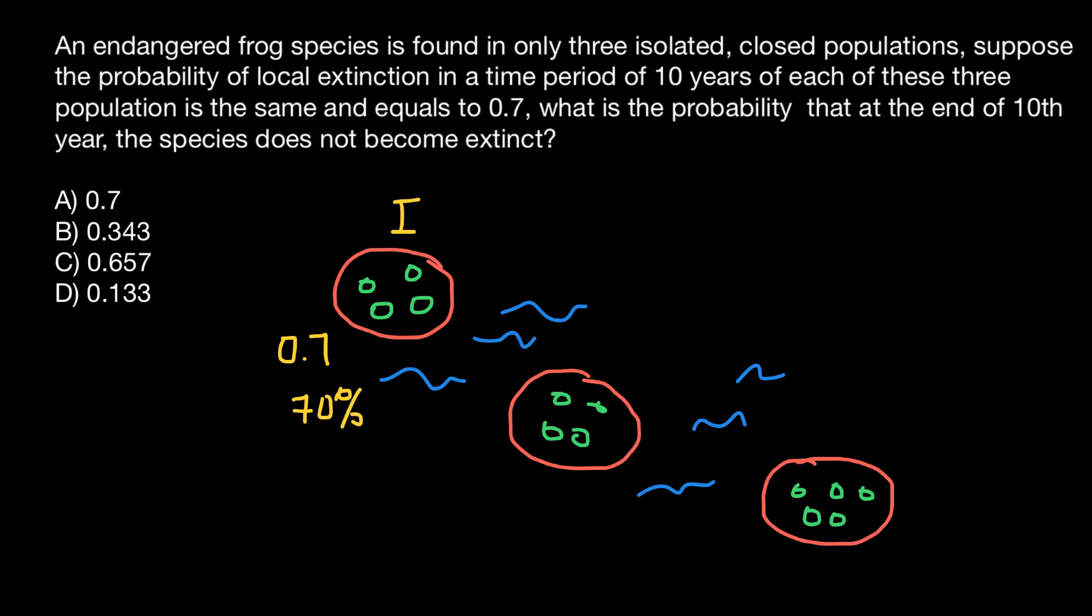So that's why this species is so endangered because, as you see, how high probability that they would go extinct on the island number one. But the same species also lives on the island number two and has the same probability of extinction.